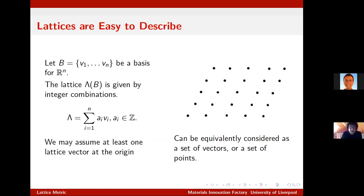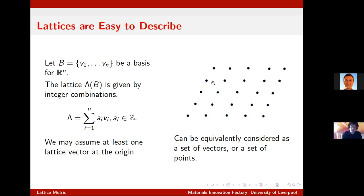There's a bit of notational sloppiness here which people will notice. We can always translate this lattice so there's one lattice vector at the origin. We can think of a lattice in two ways: either as the basis vectors and integer combinations of them, or as points living at the end of the vectors. We'll be a bit sloppy about putting arrows over things in notation. Most diagrams will be in two dimensions, although there are some three-dimensional diagrams later.